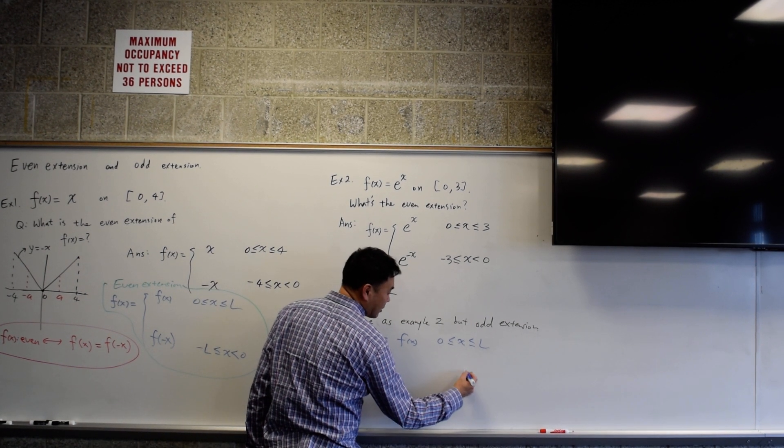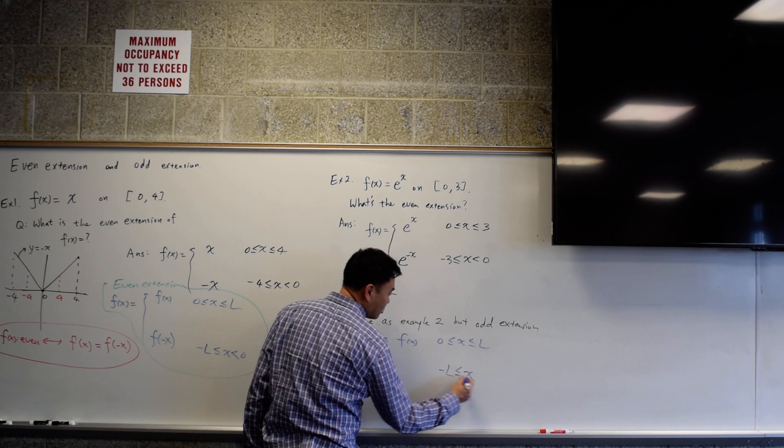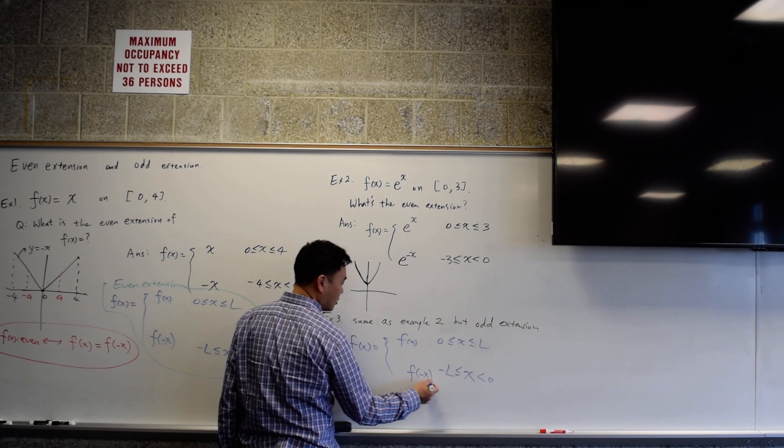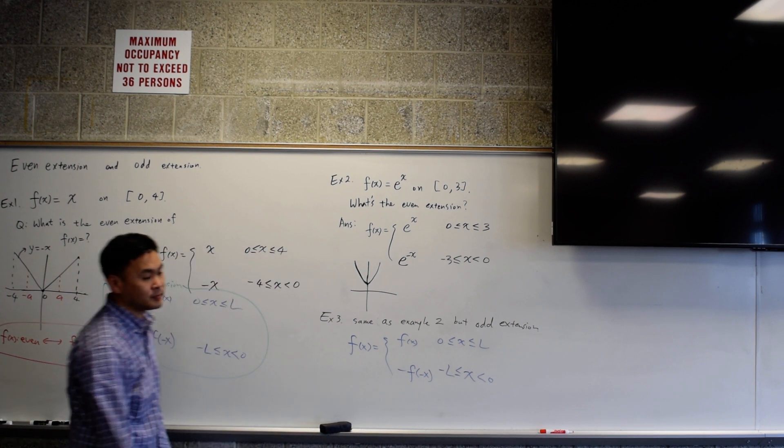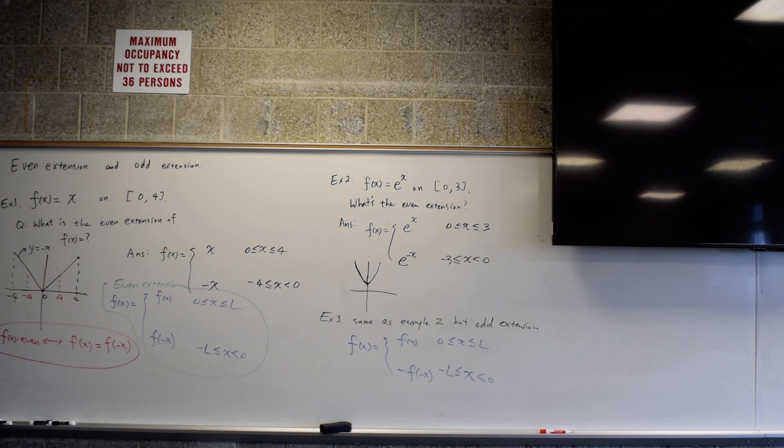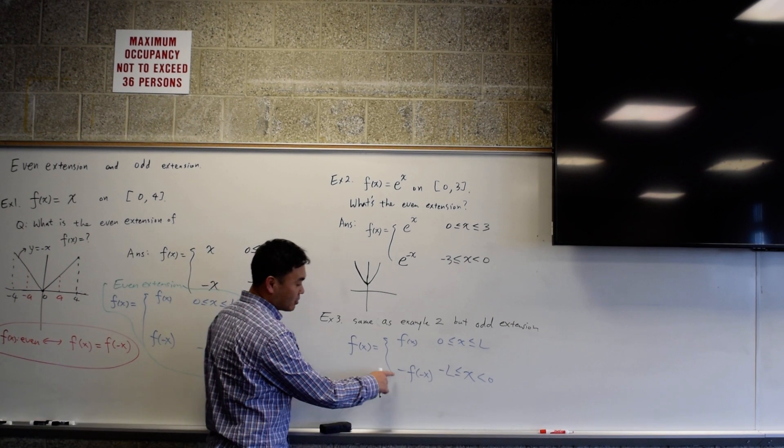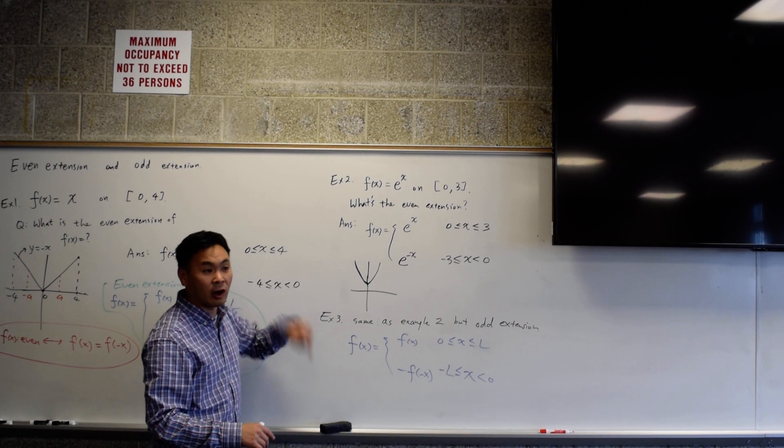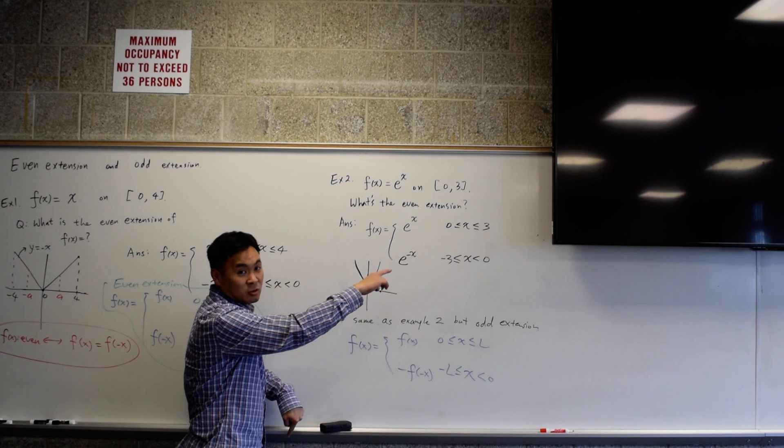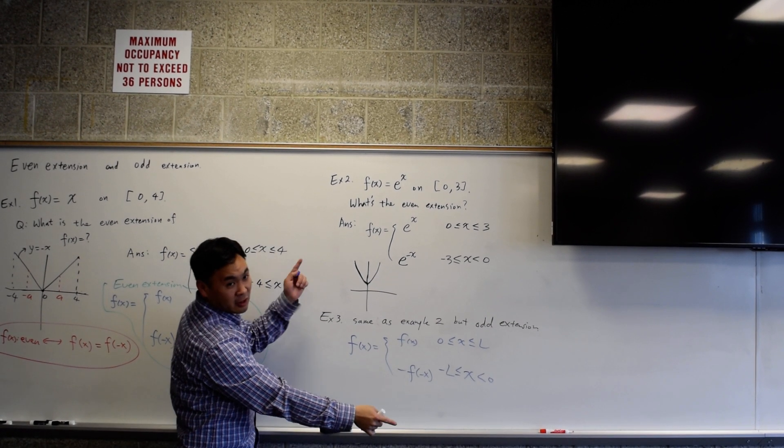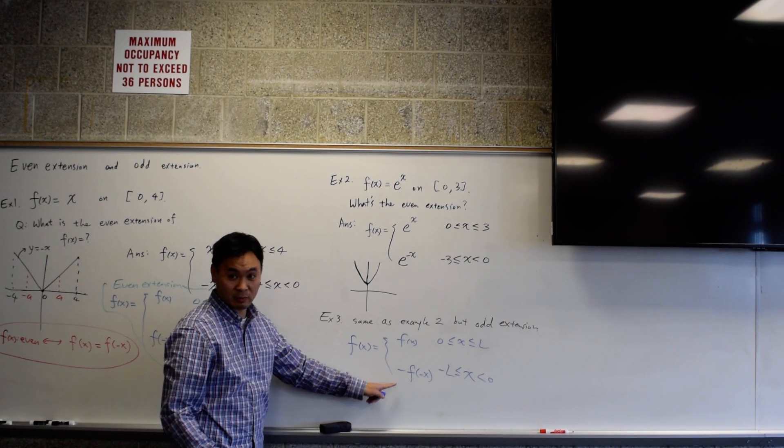So when x is negative, what you want to do is you want to put a minus. So that this minus makes the left side graph go under when the right side is over. When the right side is under, then you make it go above by this minus.